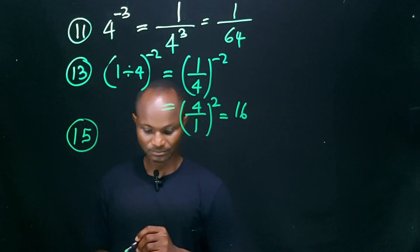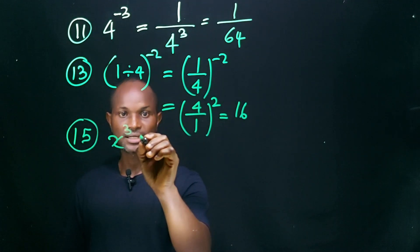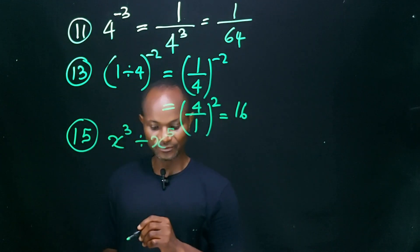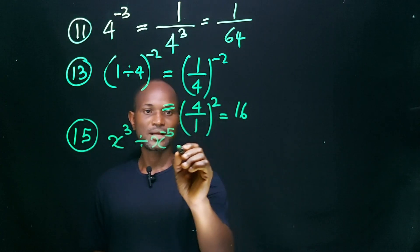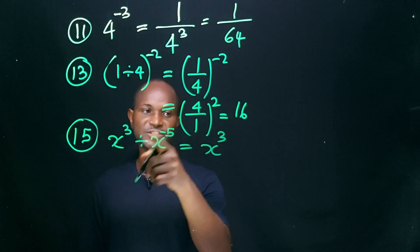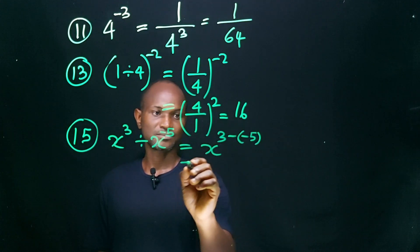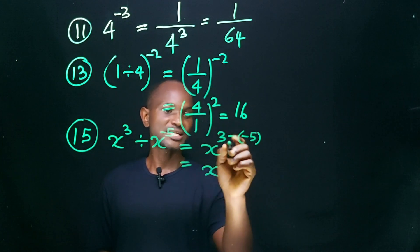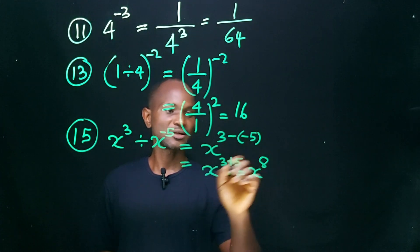Number 15: x raised to power 3, divided by x raised to power minus 5. Because of the division, we have x raised to power 3 minus (minus 5). Subtracting a negative gives us 3 plus 5, and this gives us x to the 8th power.